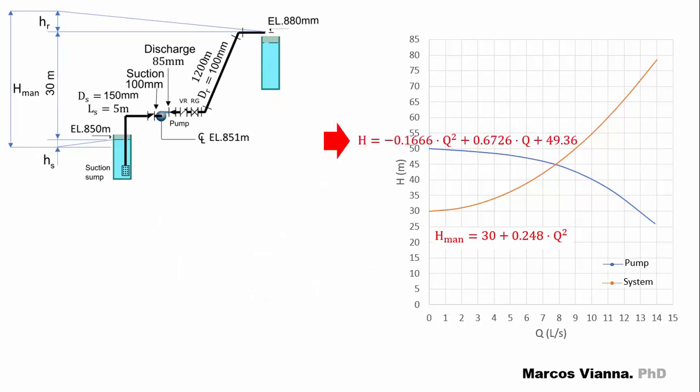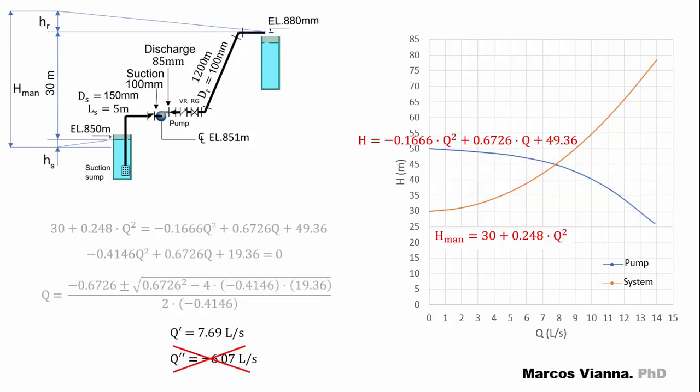But we've also seen that it's easy to find an equation for the system, and if we're able to fit an equation for the pump, we can put together pump and system equations, find a second-degree equation that we can solve, and thus find the crossing points.